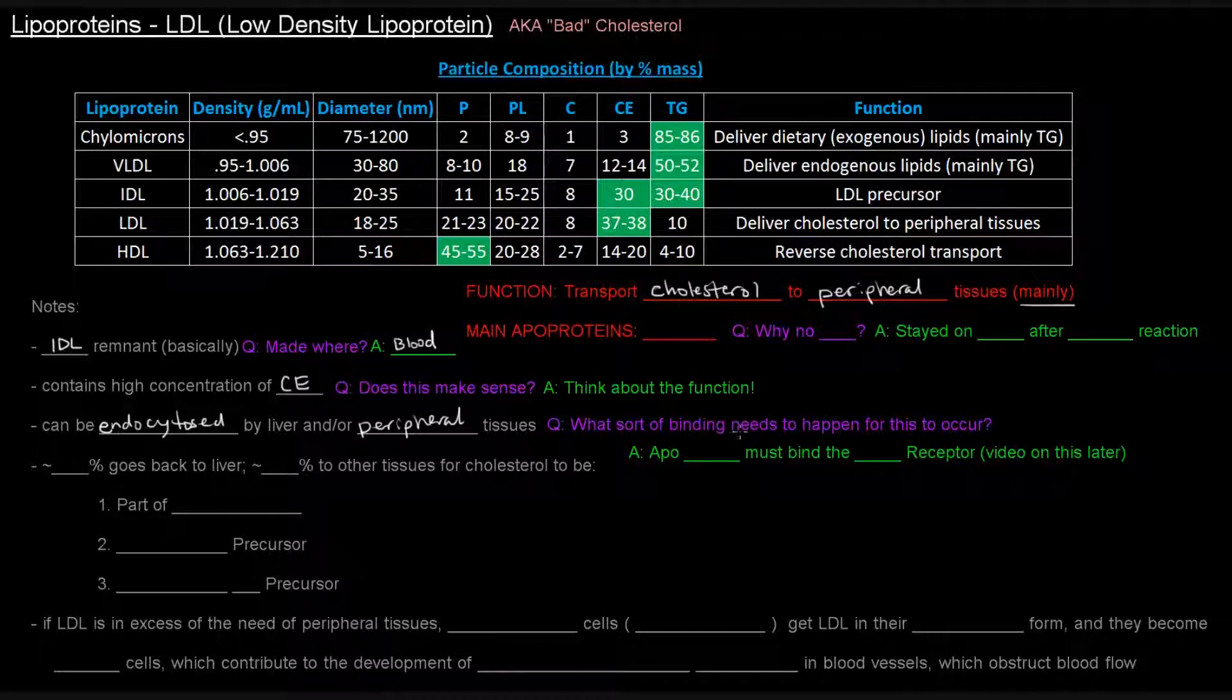What sort of binding needs to happen for this to occur? In order for the LDL to be taken up by any cell, APO protein B100 must bind the LDL receptor. And the LDL receptor is actually pretty important, and this process of the binding and being endocytosed will be discussed in another video.